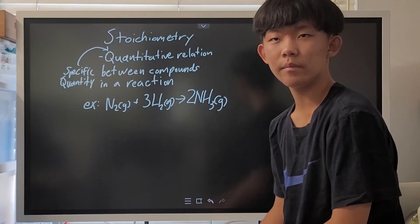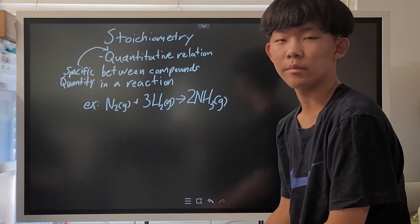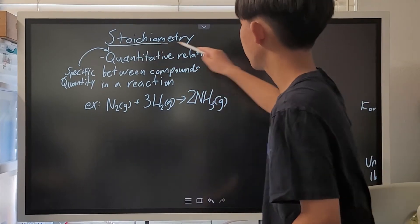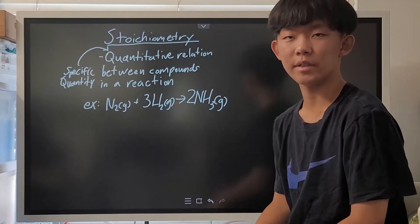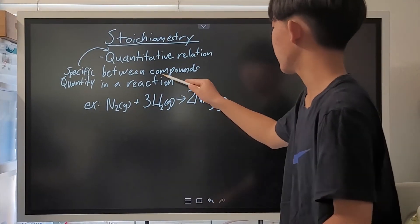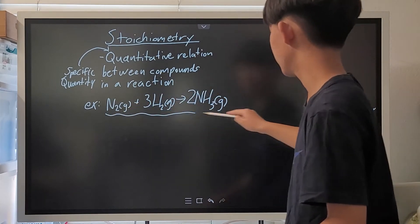Hey guys, so today let's start talking about the basics of stoichiometry. Stoichiometry is basically the quantitative relation between compounds and reactions, such as this one.